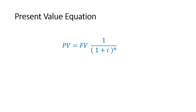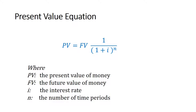You might have seen this in your book: PV equals FV times 1 divided by 1 plus i to the power of n. PV is the present value of money, FV is the future value of money, I — or sometimes R — is the interest rate, and n is the number of time periods.